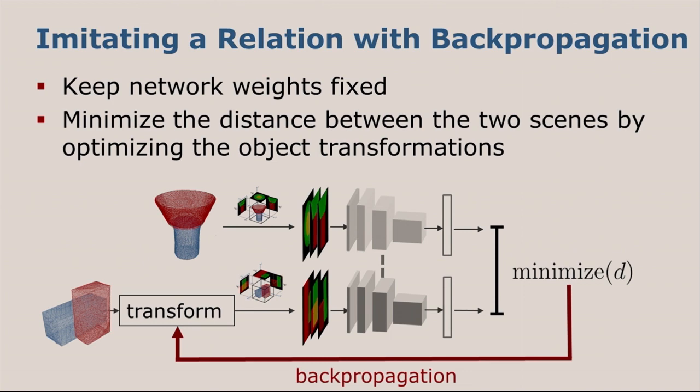To do that, the idea is to keep the network weights fixed, that is, we don't change the transformation function or our metric anymore, but we insert transformation parameters for the scene that we want to optimize. Here we want to generalize the relation of the scene on top to the objects on the bottom. For the scene on the bottom, we insert these transform parameters. Then we compute the forward path, computing the distance between the two scenes. We can formulate the problem of imitating a relation as one of minimizing the distance. All we need to do is to backpropagate the error through the network, through the projection layer, up until the transform parameters, and update them accordingly.